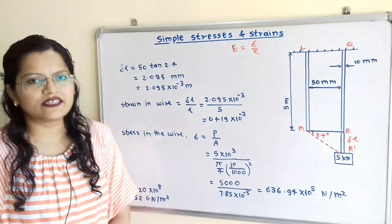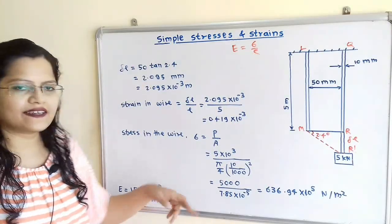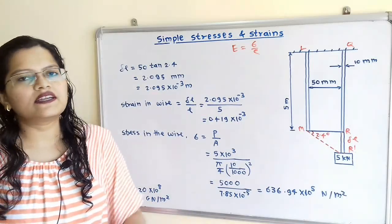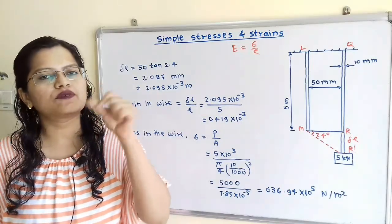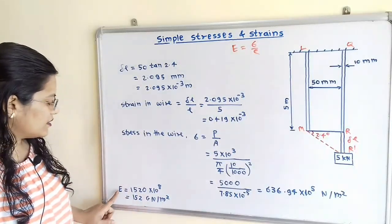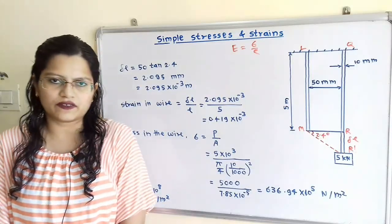So we can write this in other terms. That is 152 into 10 raised to 9 N per meter squared. But 10 raised to 9, that means we can write it as giga newton. So we can write here, Young's modulus E is equal to 152 giga newton per meter squared.